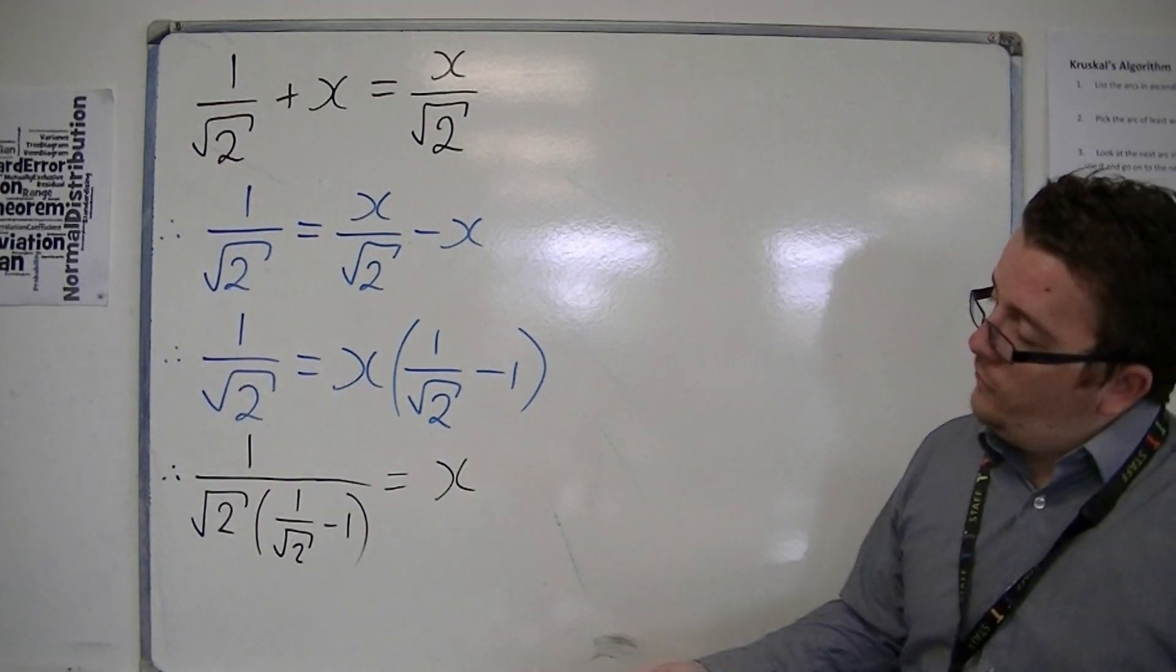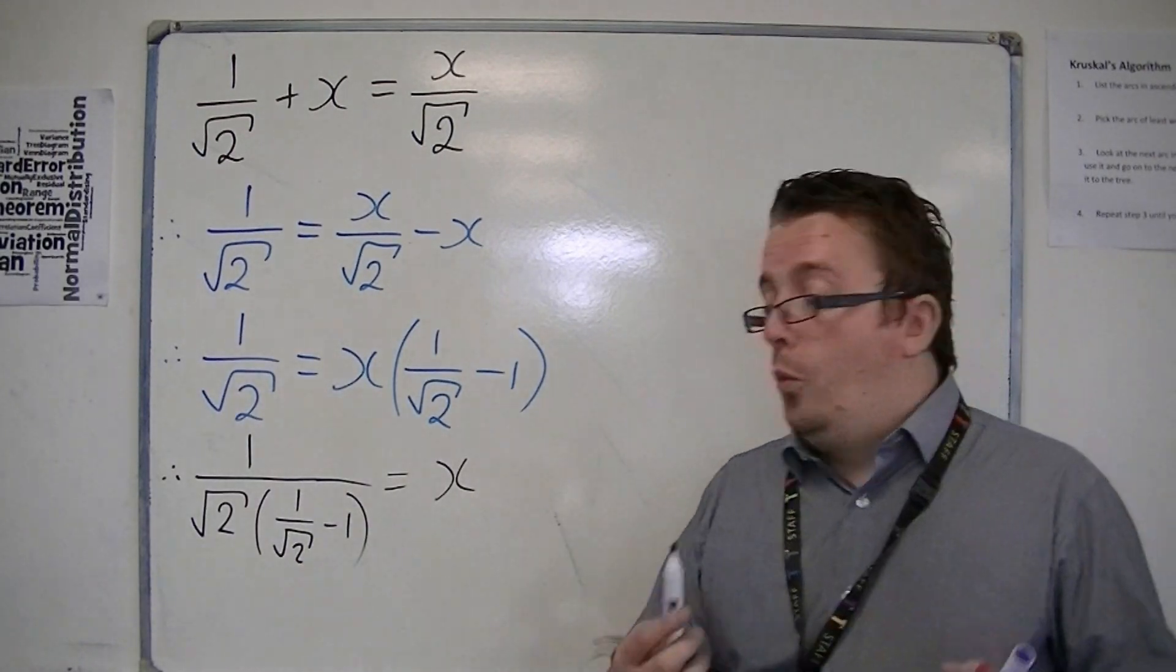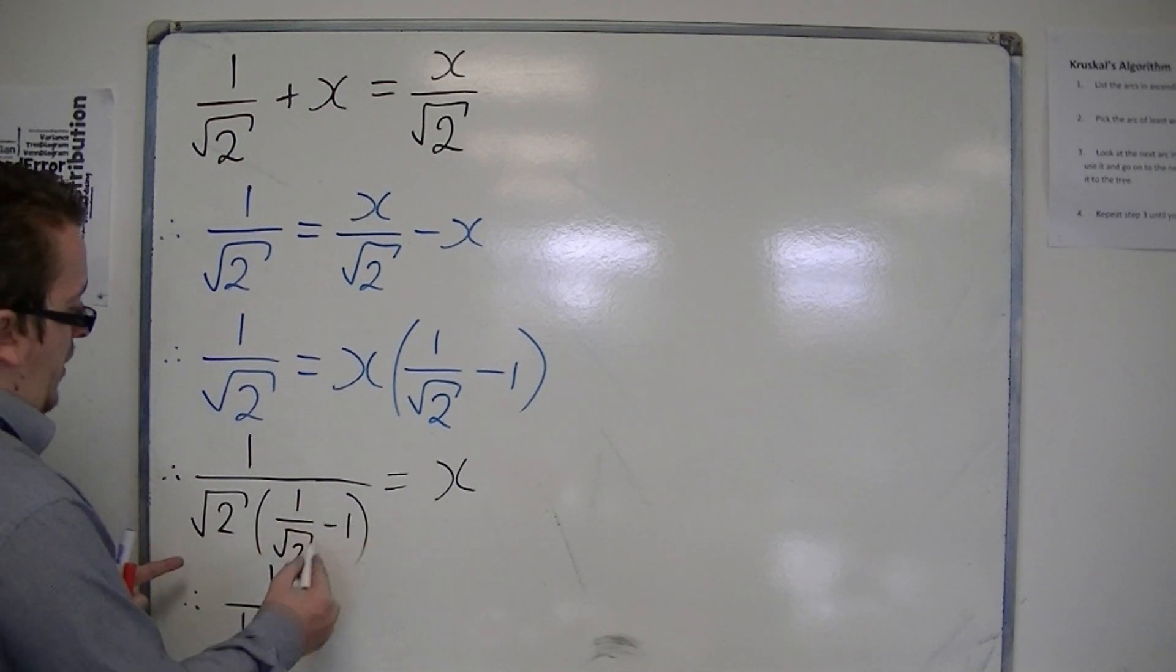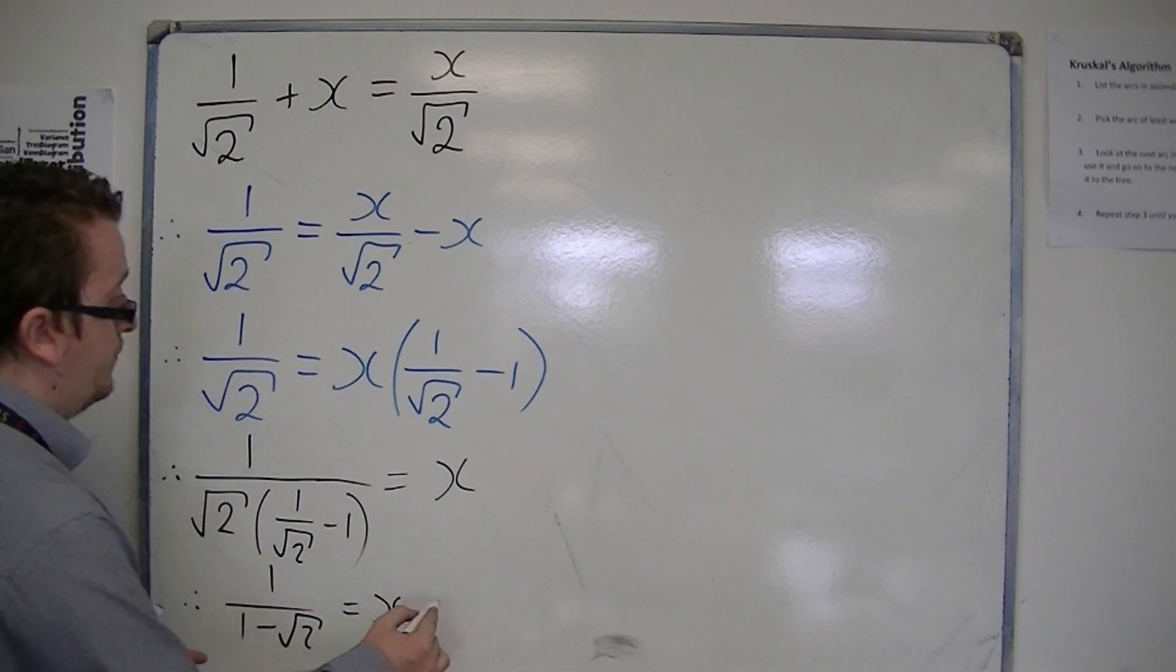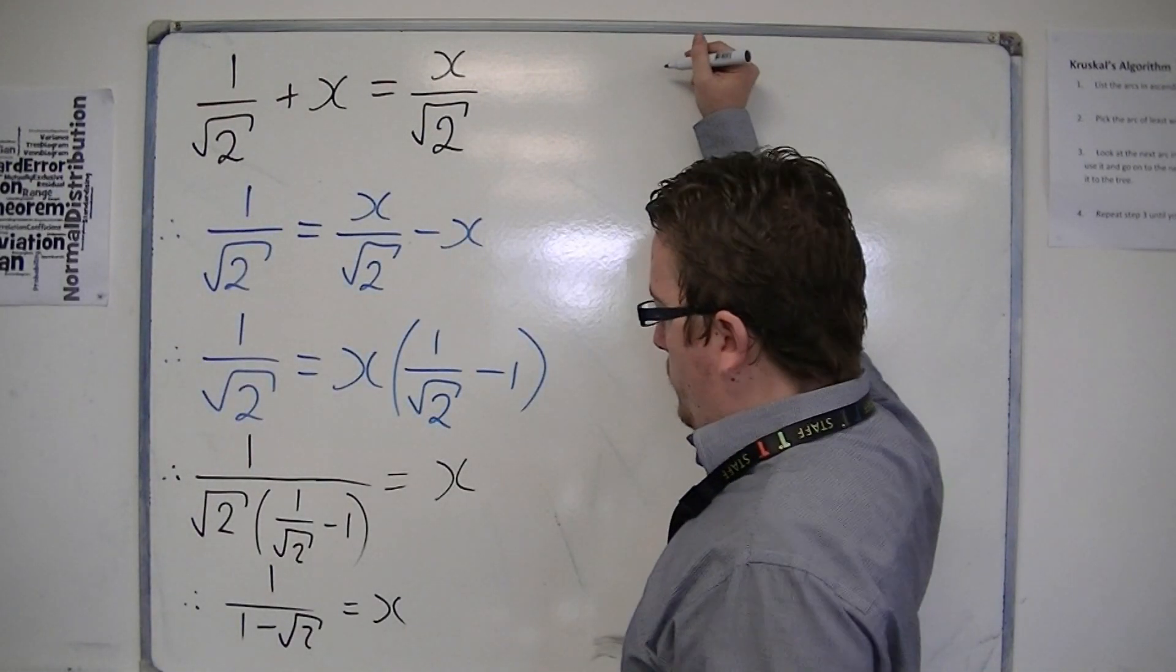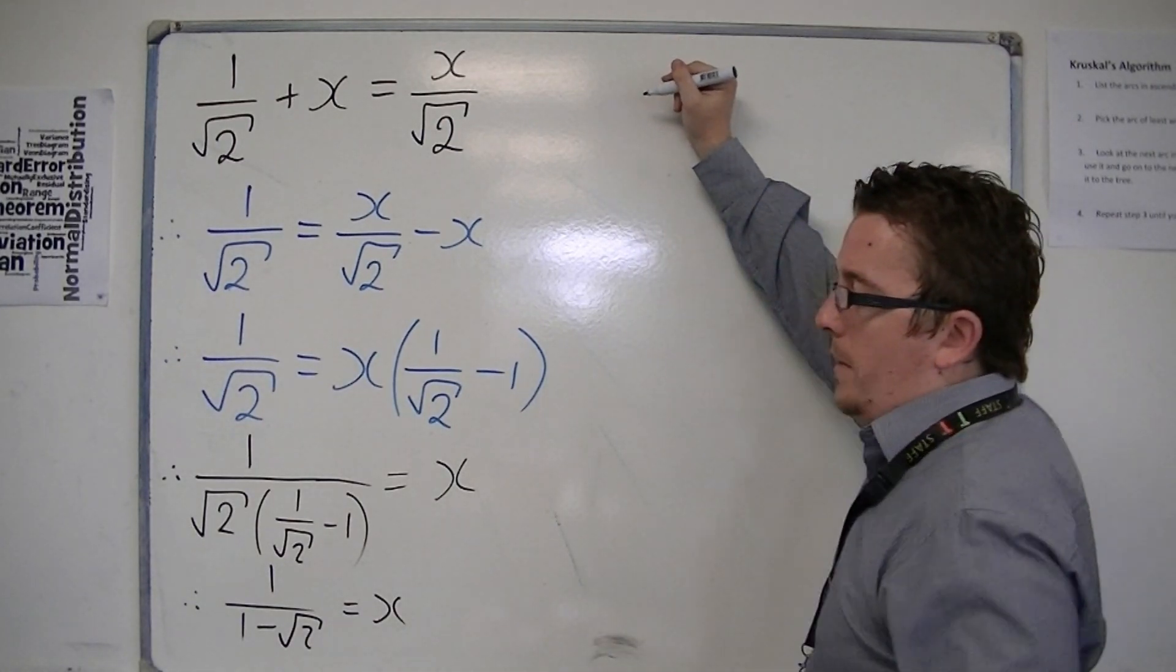Now if you multiply through this bracket, you get root 2 times 1 over root 2 is just 1, and you've got root 2 times minus 1 is minus root 2. So in actual fact, what we need to do now is we need to rationalize the denominator for 1 over 1 minus root 2.